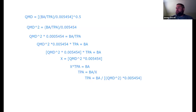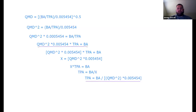We're going to need two equations: BA = QMD² × 0.005454 × TPA, and TPA = BA / (QMD² × 0.005454). Those two equations will get us everything we need for our quadratic mean diameter lines.